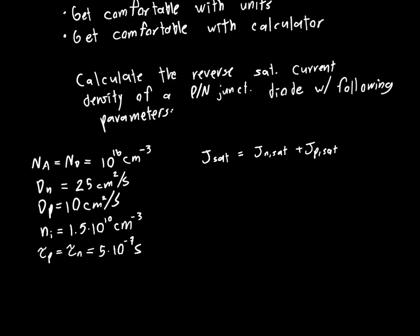The reverse saturation current density for electrons is Q times DN times NP0, where NP0 is the electron concentration on the P-side at equilibrium, all divided by LN. We know DN, we know Q, but we need to find NP0 and LN. LN is the diffusion length, and LN squared equals DN times tau N. So LN is just the square root of DN times tau N.